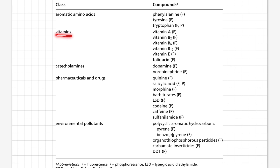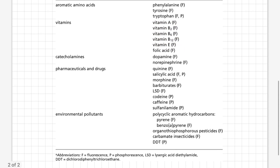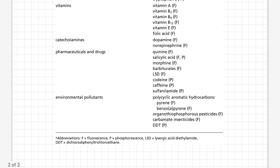Similarly, various types of vitamins like vitamin A, vitamin B2, vitamin B6, vitamin B12, and vitamin E also show fluorescence. Likewise, catecholamines such as dopamine and norepinephrine — which are very complex molecules — also show fluorescence.